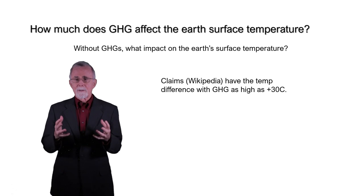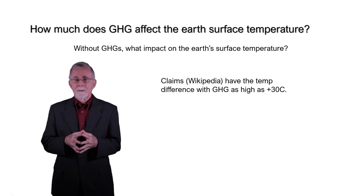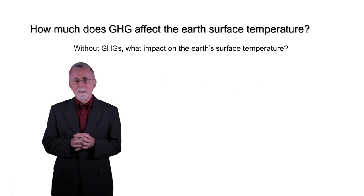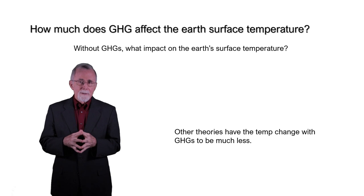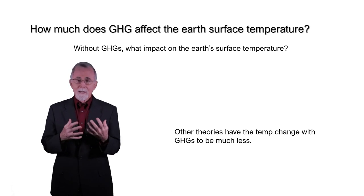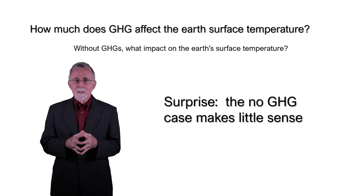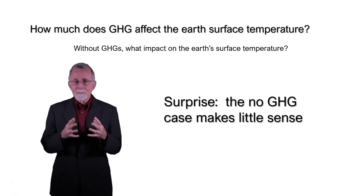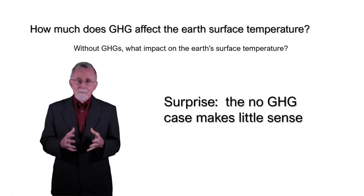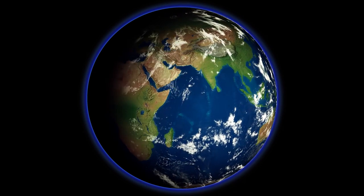How much does greenhouse gas affect the Earth's surface temperature? One way to determine this is to ask: without greenhouse gases, what impact would there be on the Earth's surface temperature? Claims in Wikipedia have the temperature difference with greenhouse gas added as high as 30-plus degrees centigrade. Other theories have the temperature change to be much less than this. The no-greenhouse-gas case makes little sense. The basic issue is that one cannot assume the absence of water vapor given the amount of water on the planet. Removing greenhouse gas entirely is not a meaningful option for the question stated. A brief look at the Earth provides insight: the no-greenhouse-gas case is not practical given the impact of the oceans and the built-in nature of water vapor.